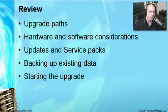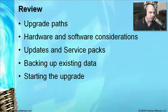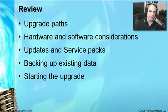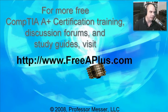In review, we've now put everything together needed to begin the upgrade process. We know the paths available to move to Windows 2000 Professional and Windows XP Professional. We know the hardware and software considerations to think about before upgrading. We need to have our service packs and driver updates available, make sure our data is backed up, and then we can begin. In the next couple of videos we'll step through the actual upgrade processes for both Windows 2000 and Windows XP — which will be really important for your CompTIA exams.